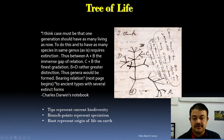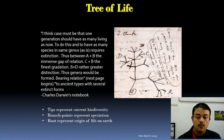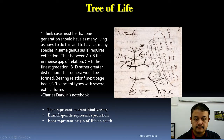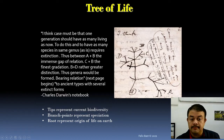In this tree-like illustration, the tips represent current biodiversity — extant species — while branch points represent speciation events.